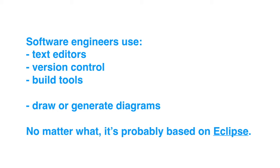So engineers normally use text editors, some version control systems, build tool chains, things like this. And some engineers can also use diagrams of different notations, especially in the design stages.